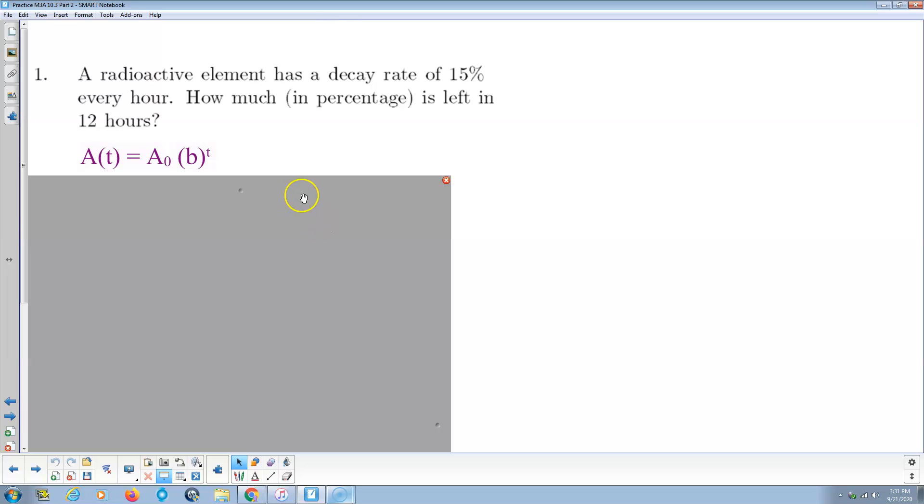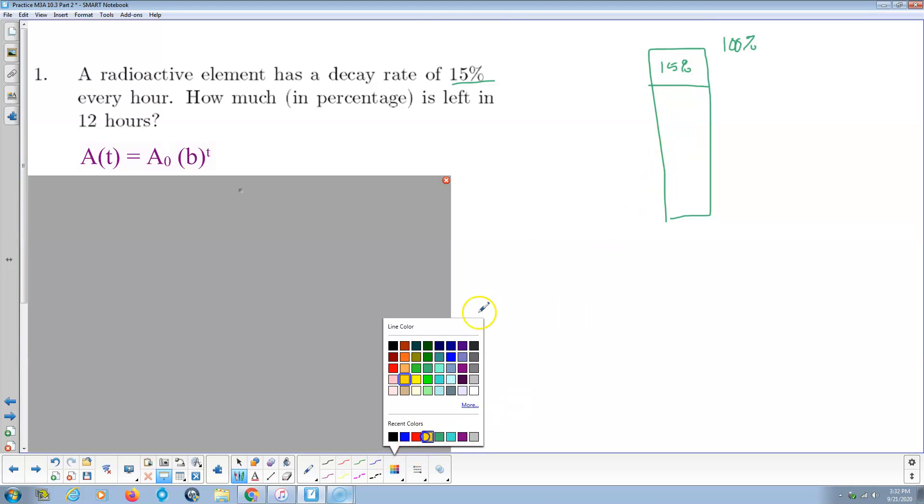So a radioactive element has a decay rate of 15% every hour. How much is left in 12 hours? So this decays hourly. This is a bar graph that shows the amount of radioactive element we have. We start with 100% of whatever amount it is, it doesn't matter what amount it is.